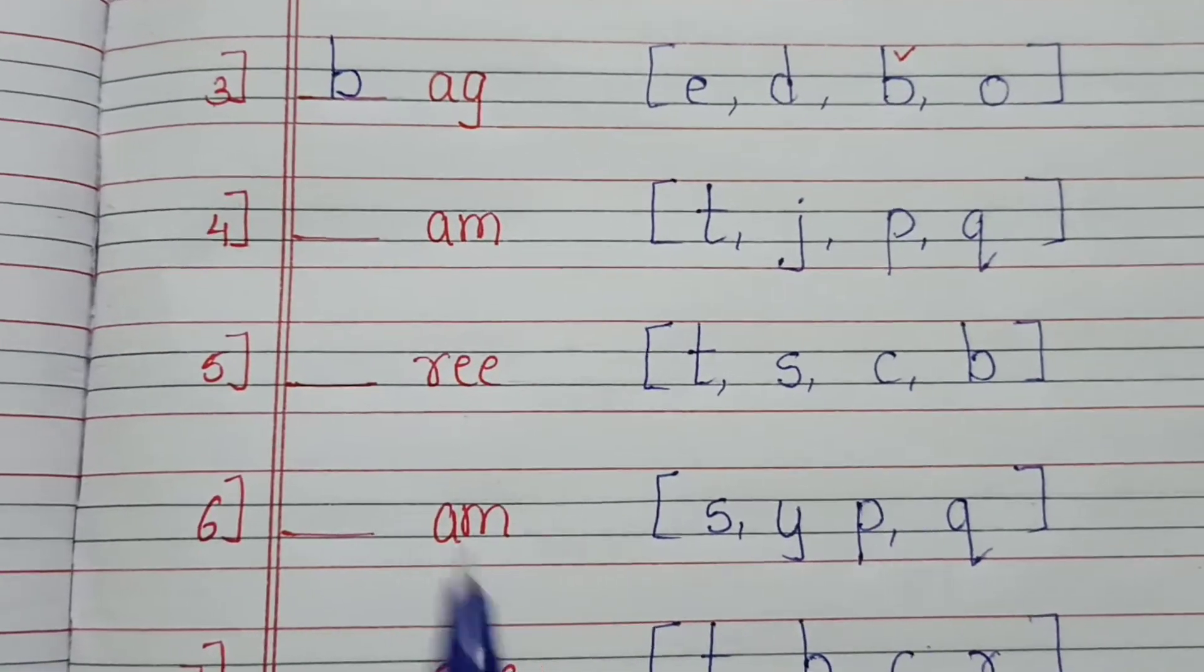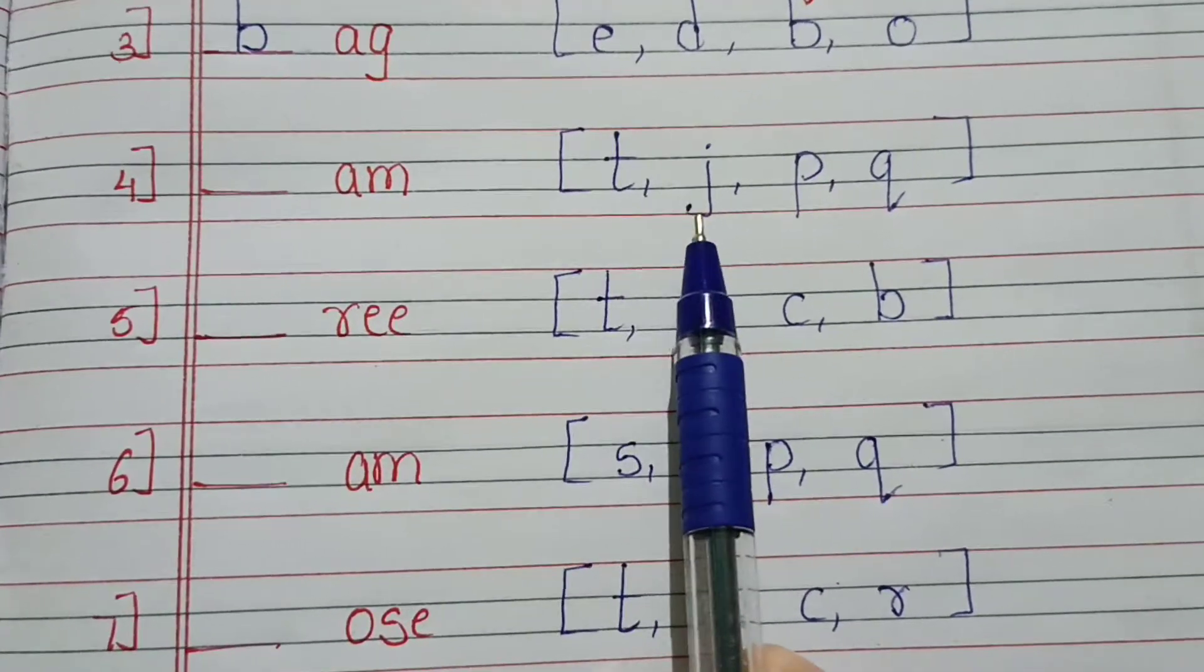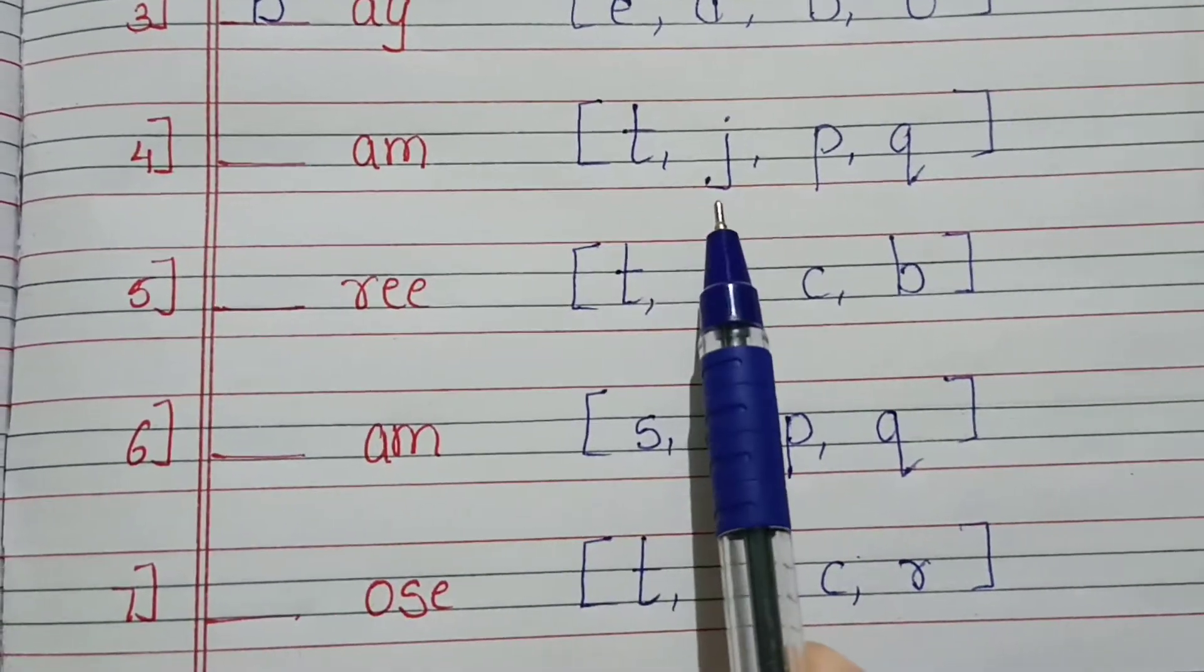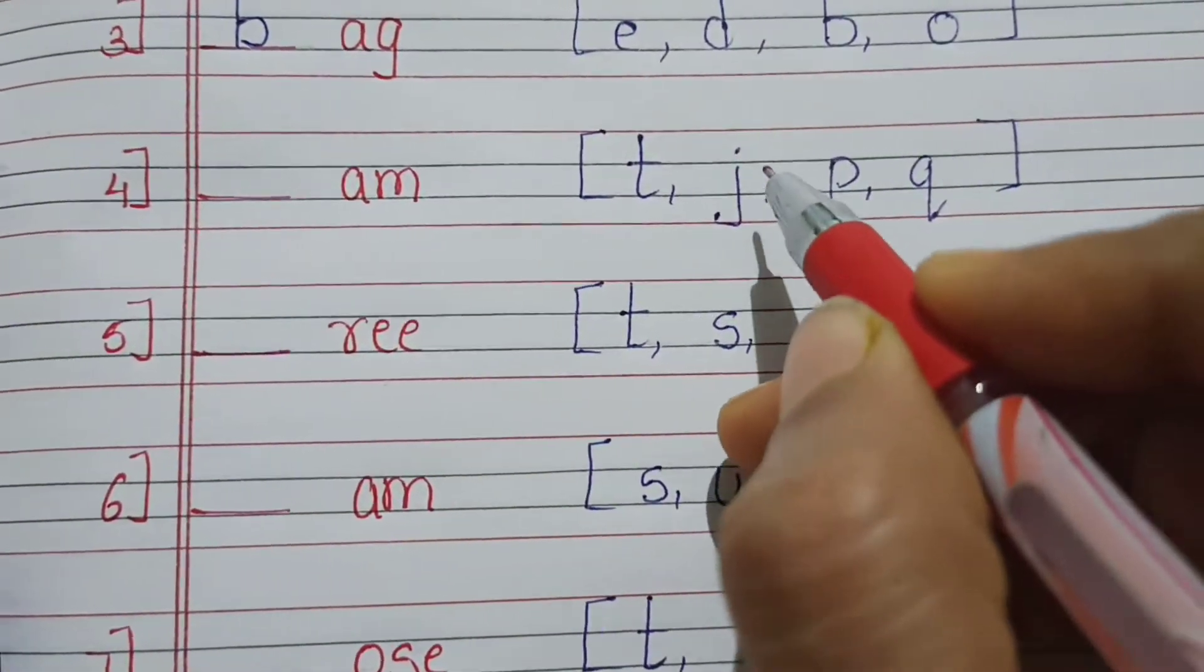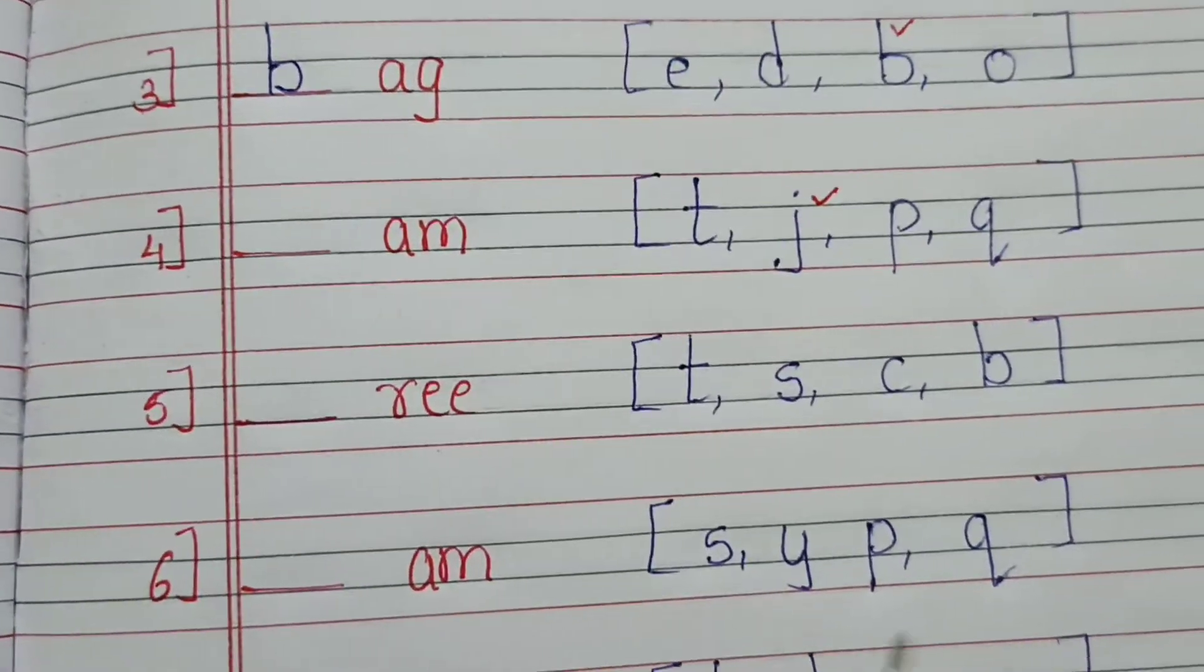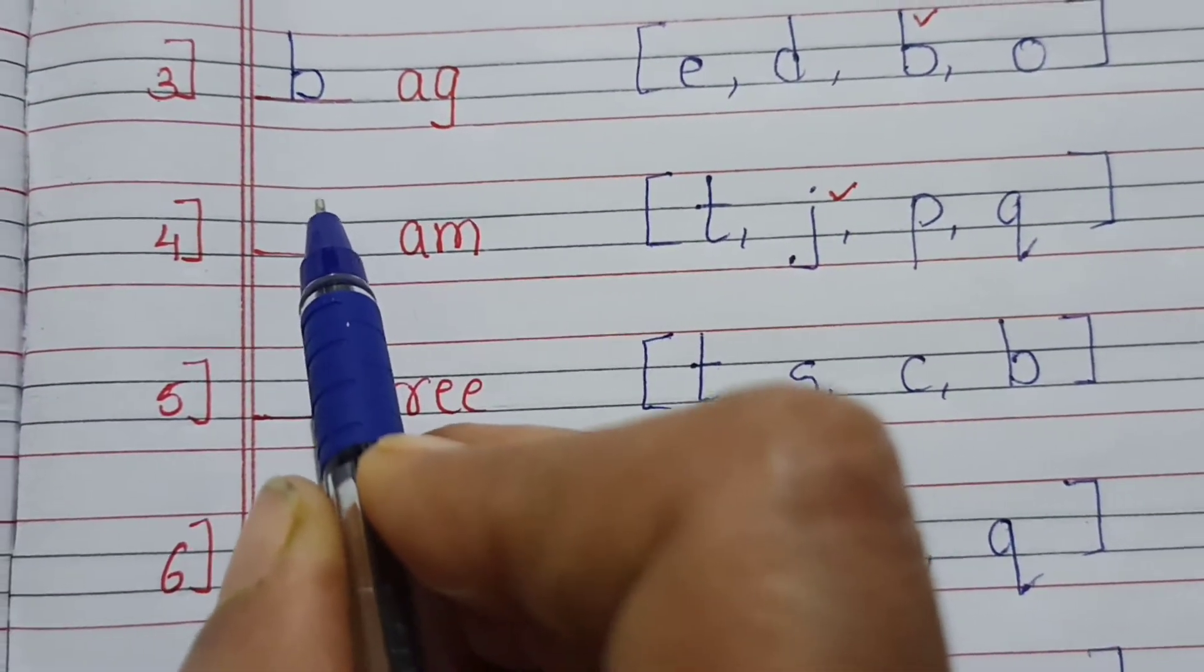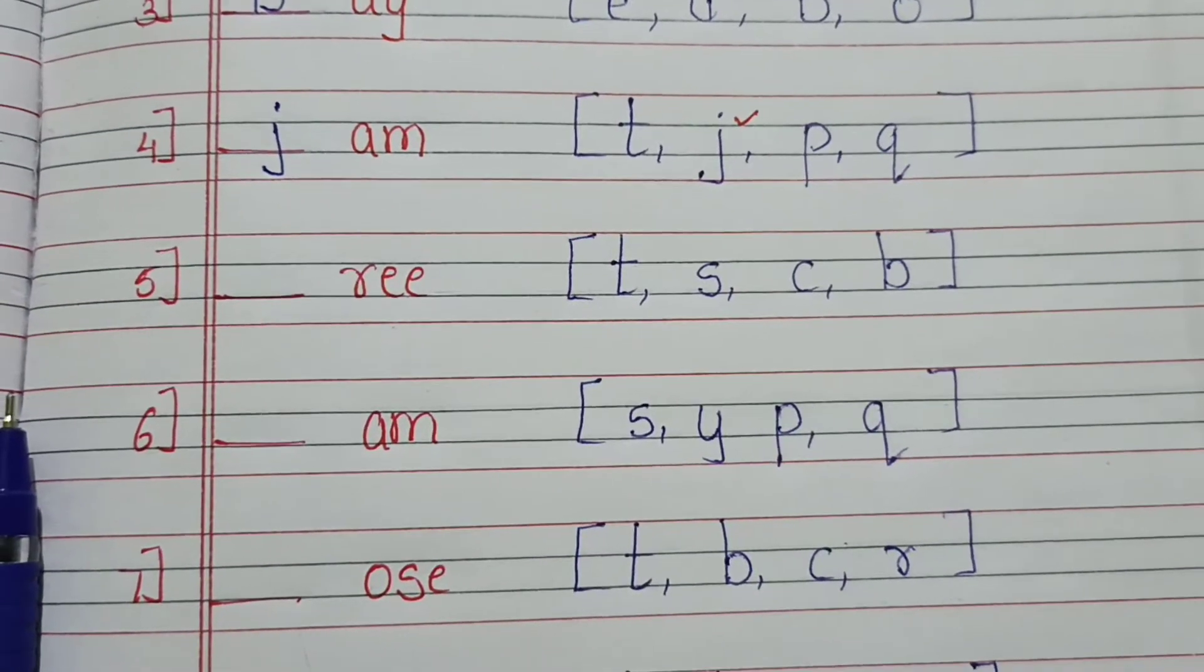Next is fourth one, dash A M. So can you see here? T, J, P, and Q. So what correct answer is this? J, A, M. Yes. So what is the correct answer? J. J is the correct answer. So I am going to write here J. J, A, M, jam.